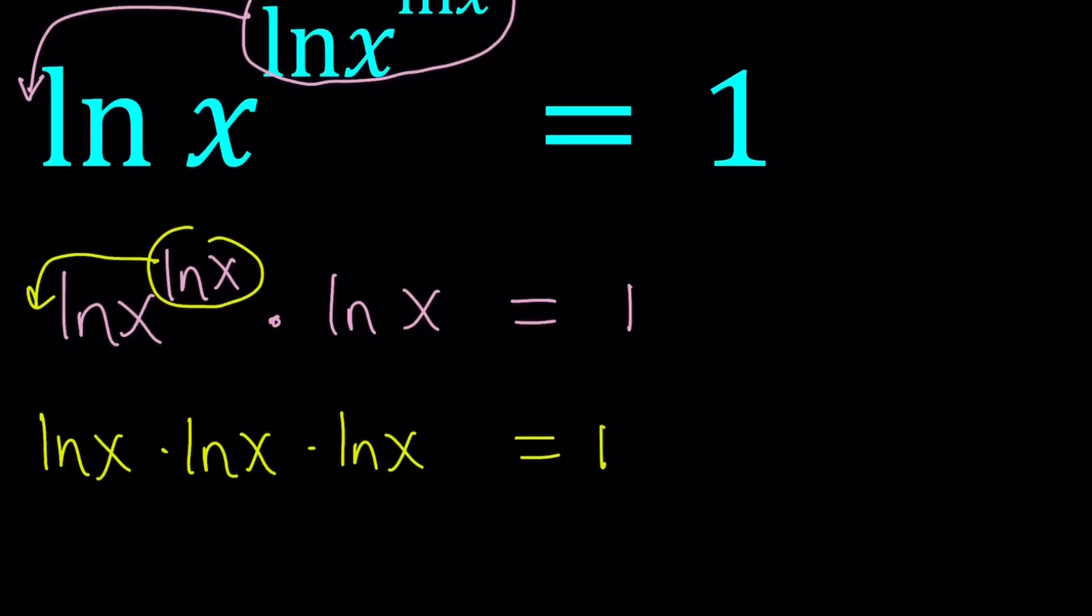When I write ln x to the power ln x, the base is x, not ln x, because we would write it as (ln x) to the power ln x if ln x were the base. So we have this product. And since we wrote the same thing three times, this means ln x to the third power equals 1.